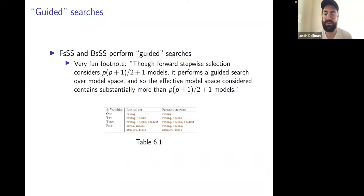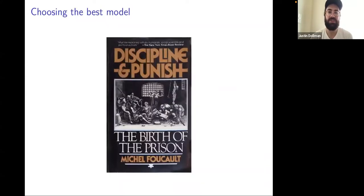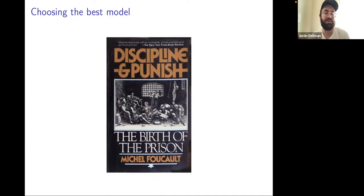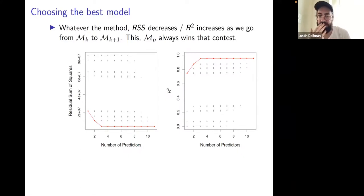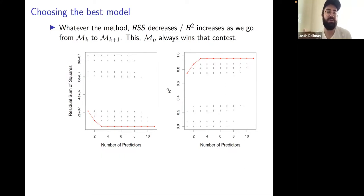Now we talk about how to choose between the M-sub-K models. The RSS decreases and R-squared increases as the number of predictors grows, which means M-sub-P will always win if we let RSS or R-squared decide. That's not good — we don't accomplish any of the goals we originally wanted with finding a subset. So these criteria are no good; we need to estimate the test error.